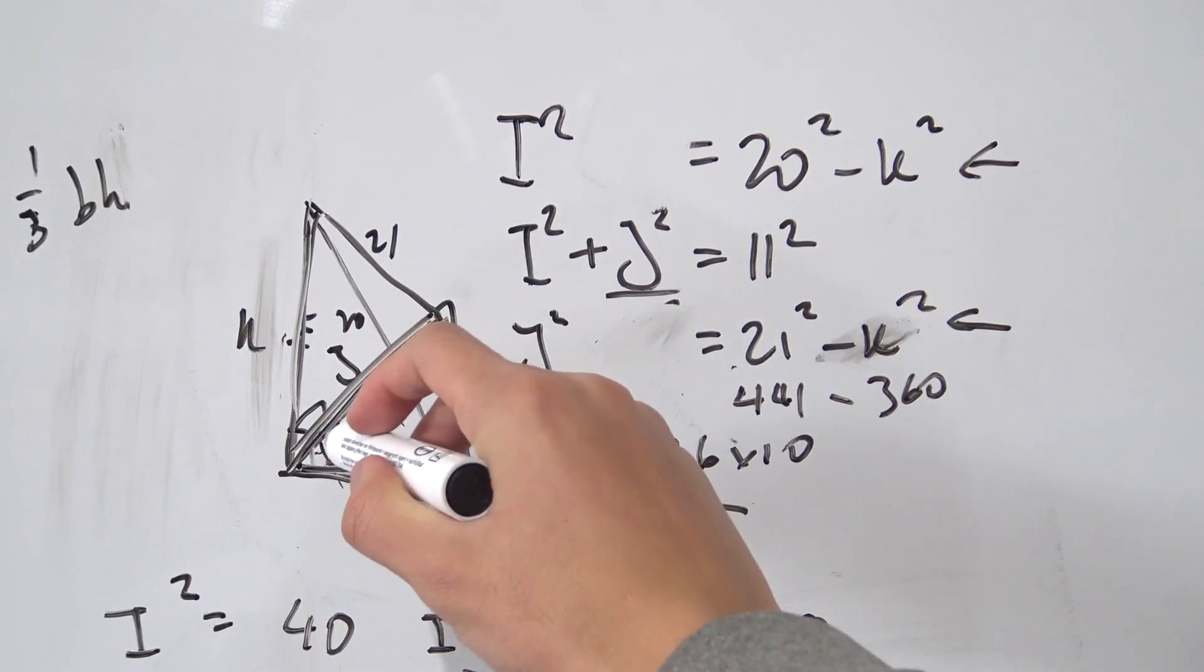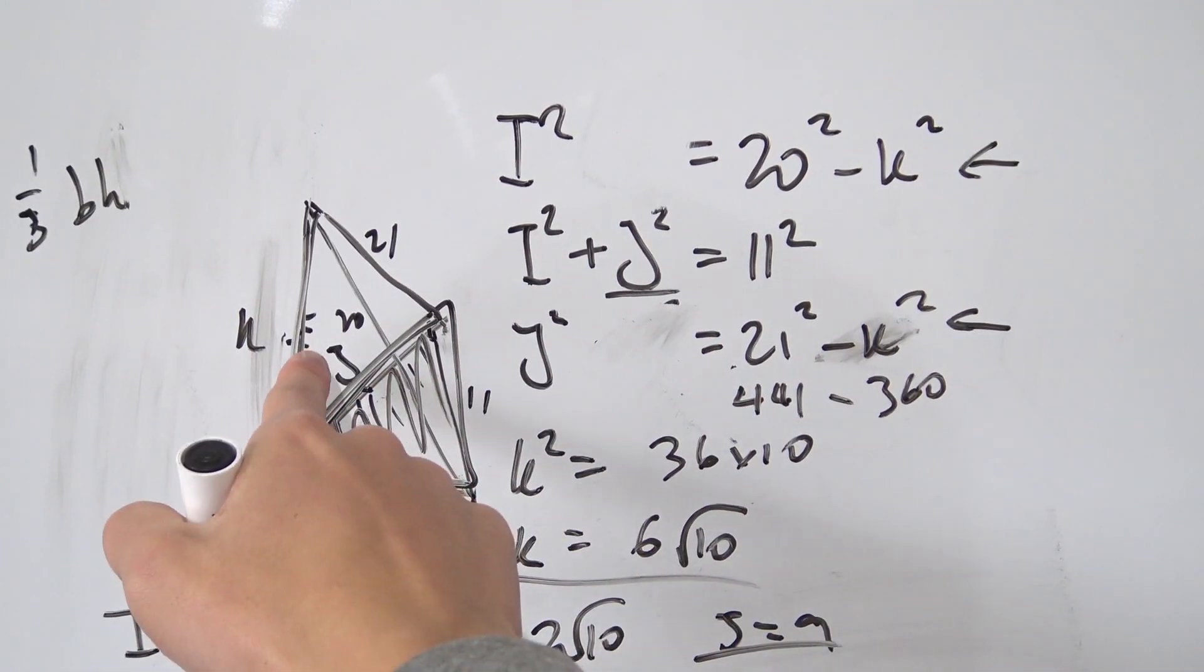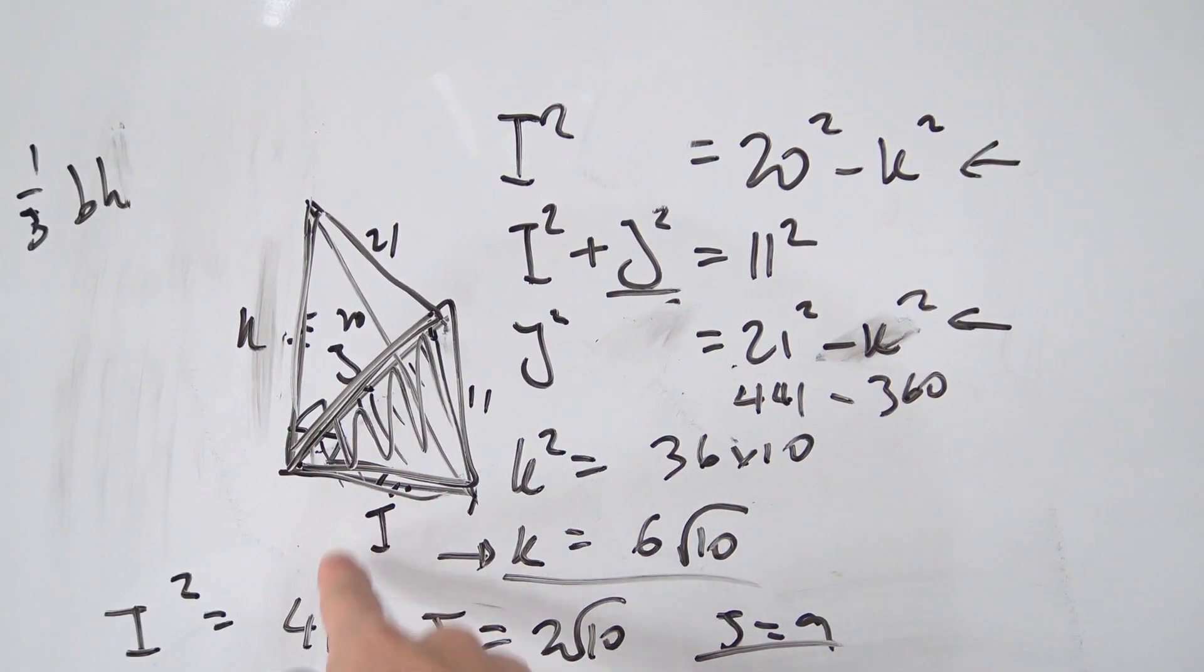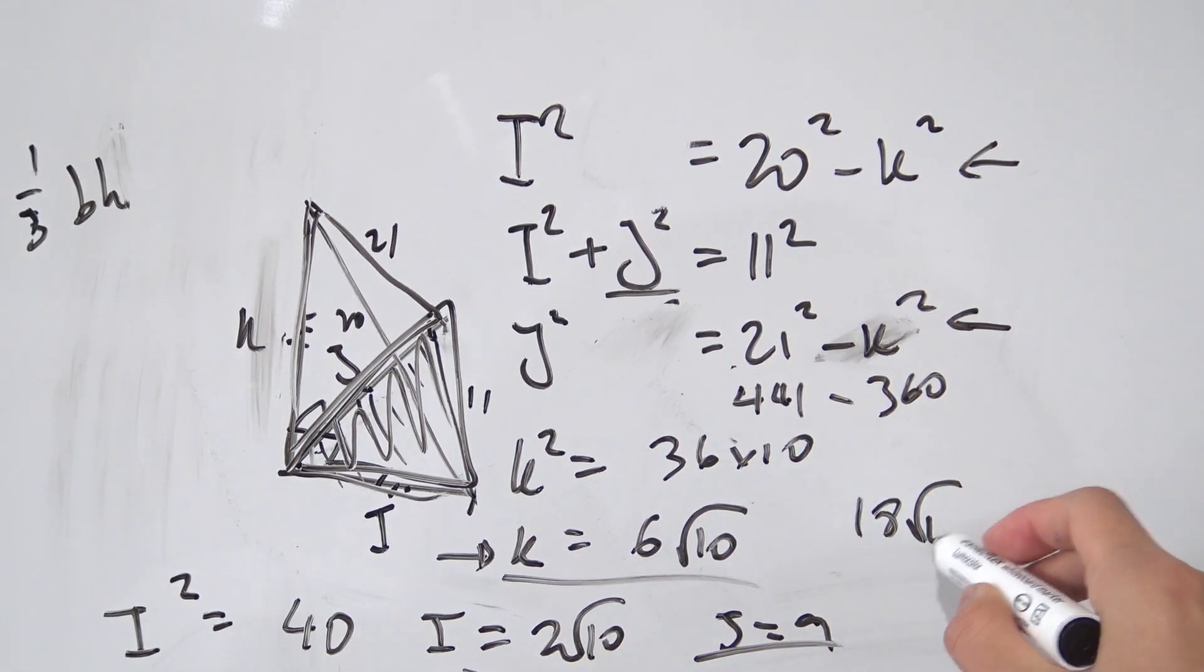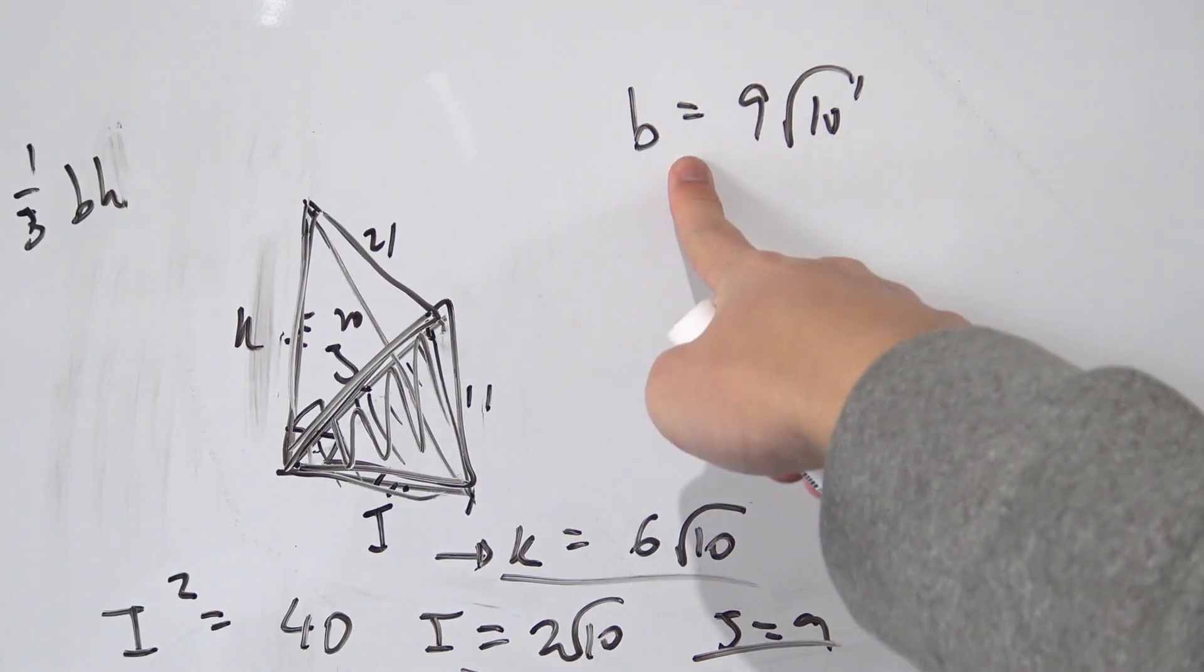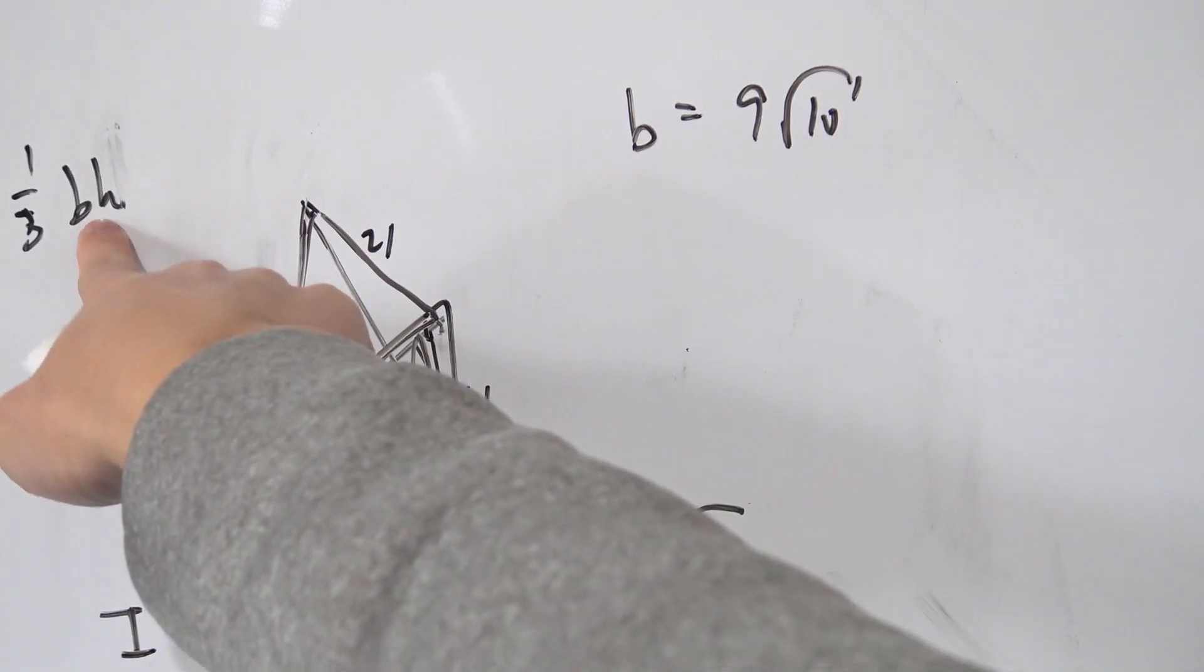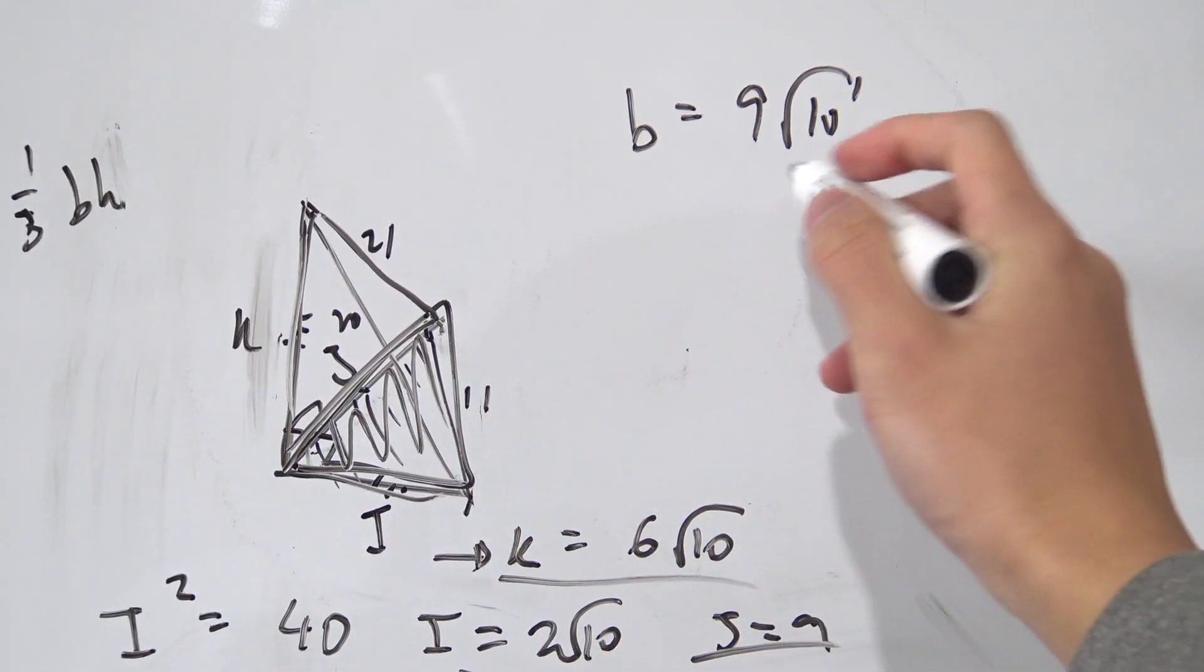So now what we have to do, we have to find this area of the base right here. So that's just the triangle. So we just have to multiply J and I and divide it by 2. So J times I, that was 18 root 10. And then divided by 2, that's 9 root 10. So we have our base being 9 root 10. And then now for our height, our height is K. And K is 6 root 10.